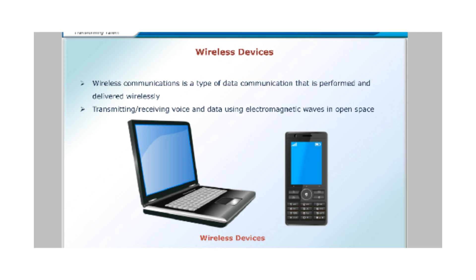Wireless devices are mobile phones and computers. Wireless means we are not connecting any wire to mobiles or computers — only a charger is connected for charging purposes. Wireless communication is a type of data communication performed and delivered wirelessly. By using mobile phones we send data from one person to another, and by using computers we send information from one device to another, without any wire connection.